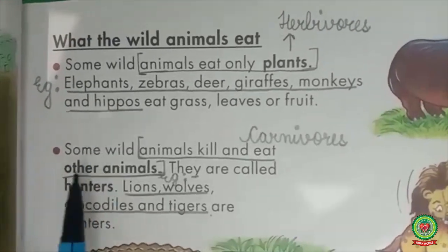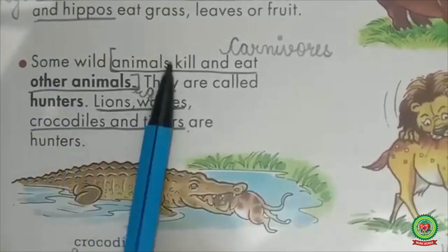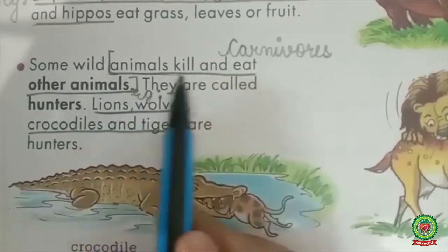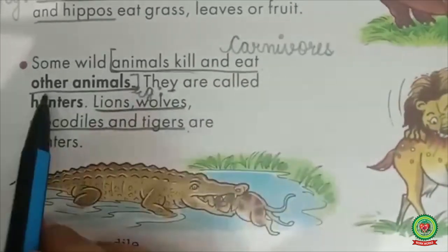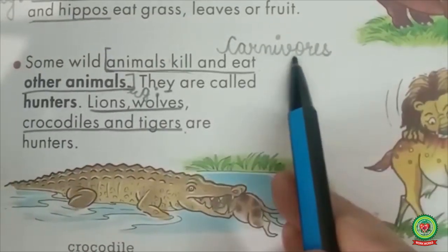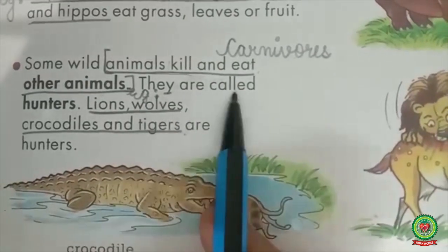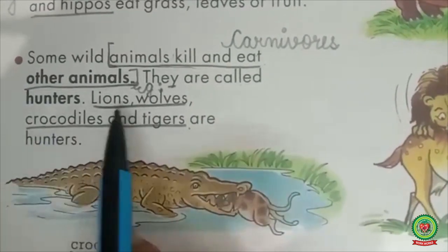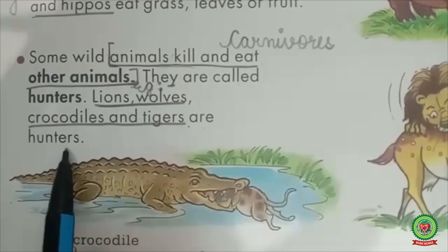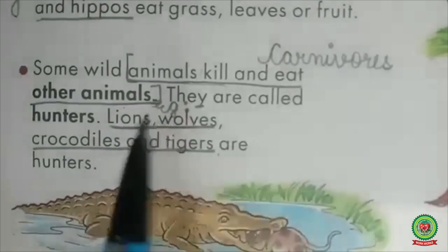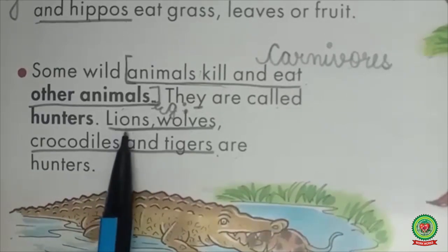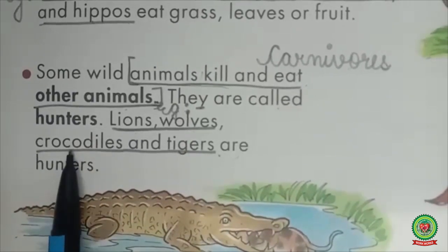Some wild animals kill and eat other animals. Now underline this line: 'Animals kill and eat other animals.' These kinds of animals are known as carnivores — they are called hunters. Lions, wolves, crocodiles, and tigers are hunters. Underline these examples of carnivores: lions, wolves, crocodiles, and tigers.